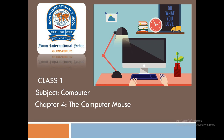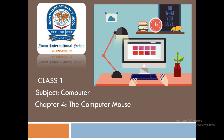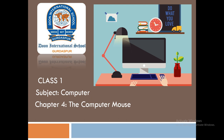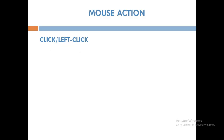Good morning students. In our previous video we have seen about mouse buttons and about the right position to hold a mouse. In today's video we will see actions of a mouse button. Mouse buttons help you to do important actions. When you press a mouse button you can hear a click sound. Let us learn about the four actions of a mouse button.